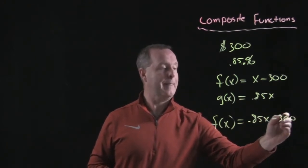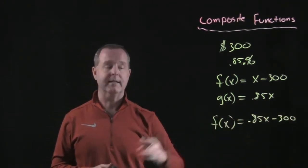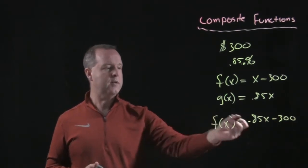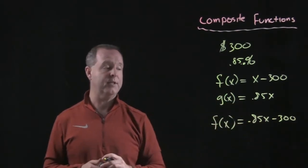Both discounts are being claimed within that one function. Now notice this .85 of x is also my g of x.